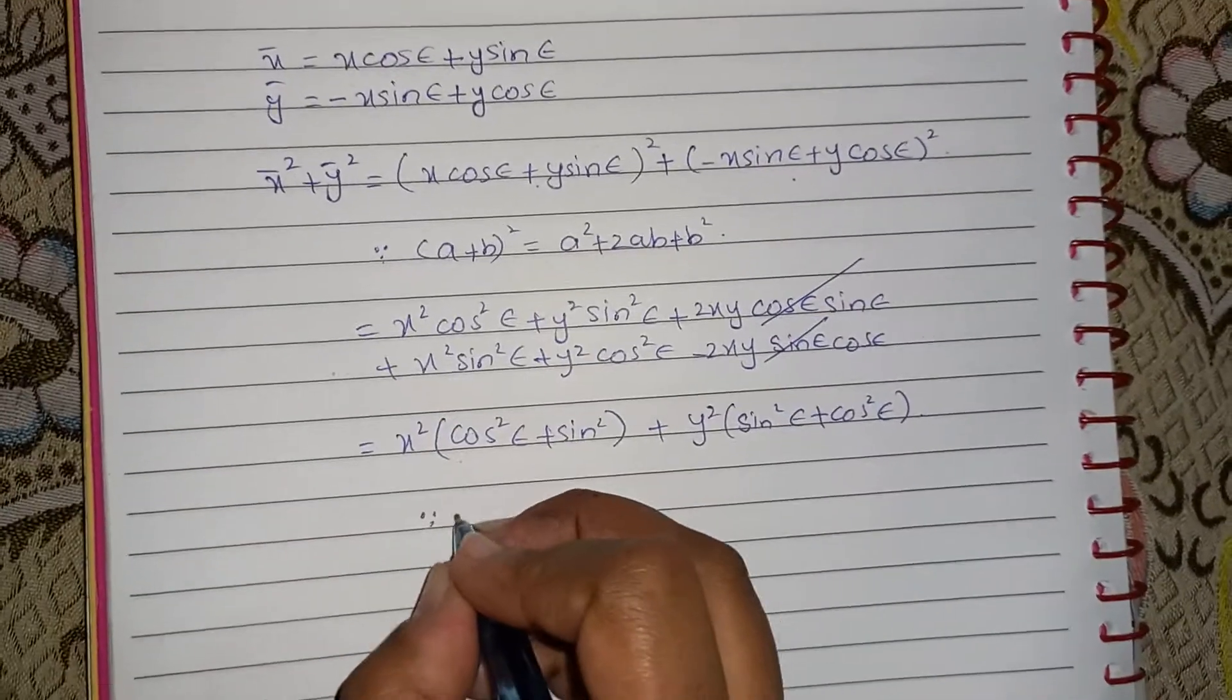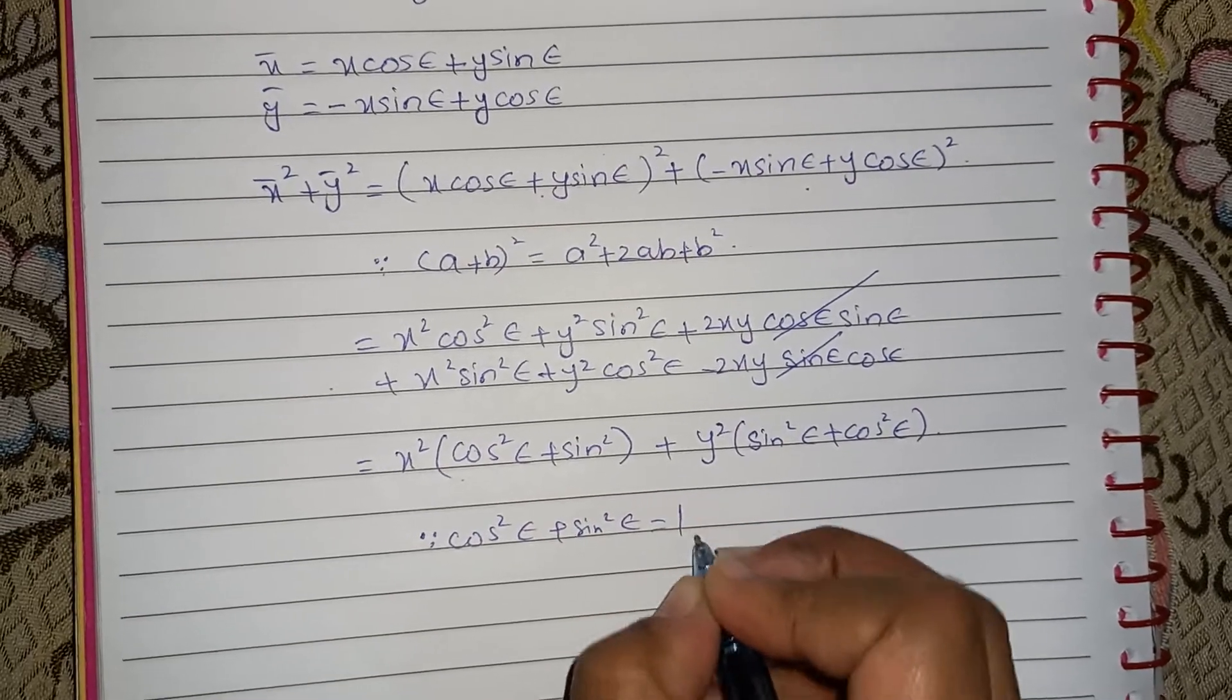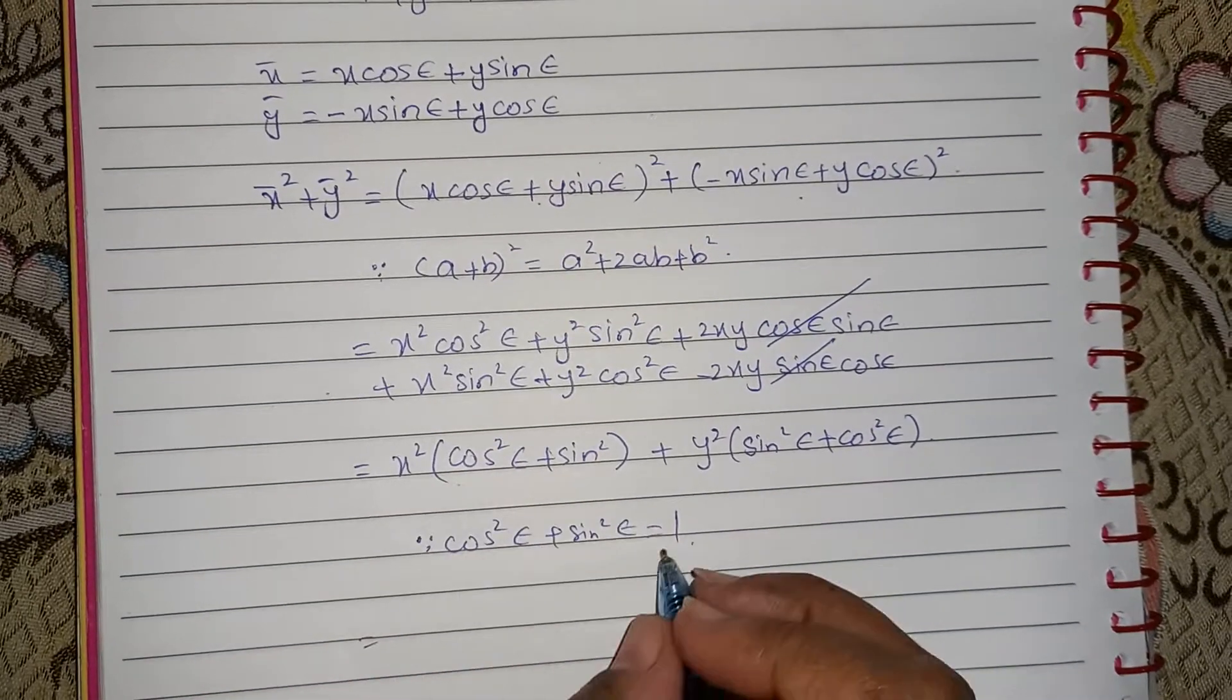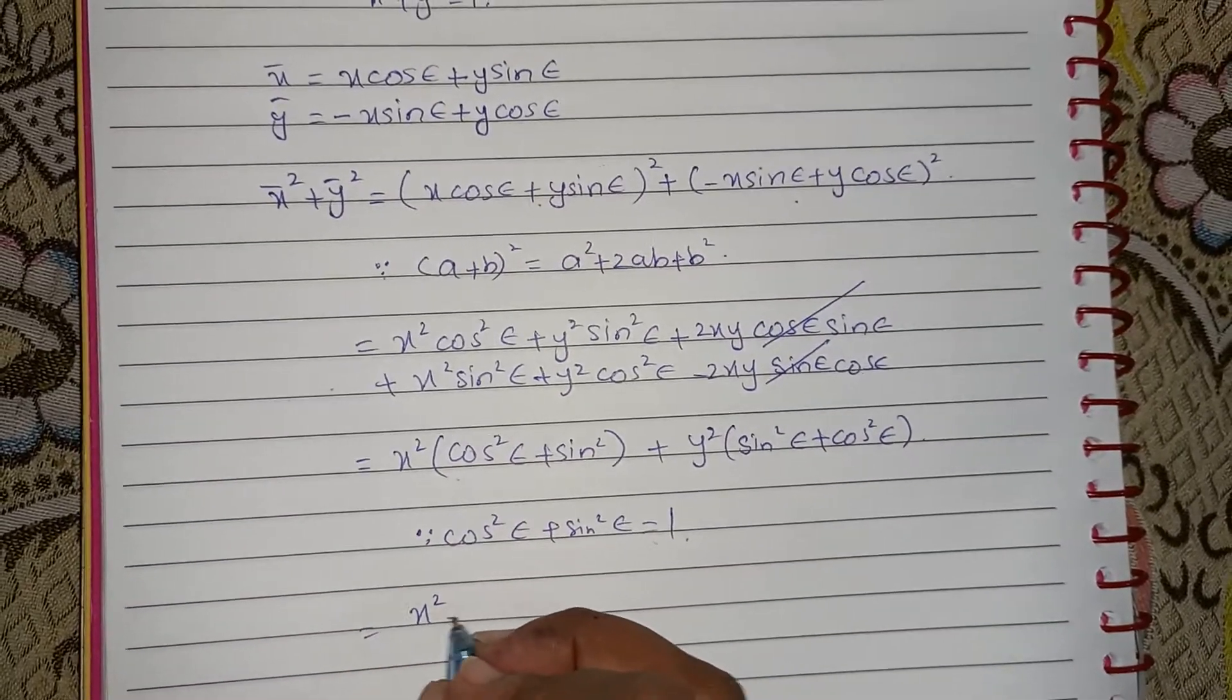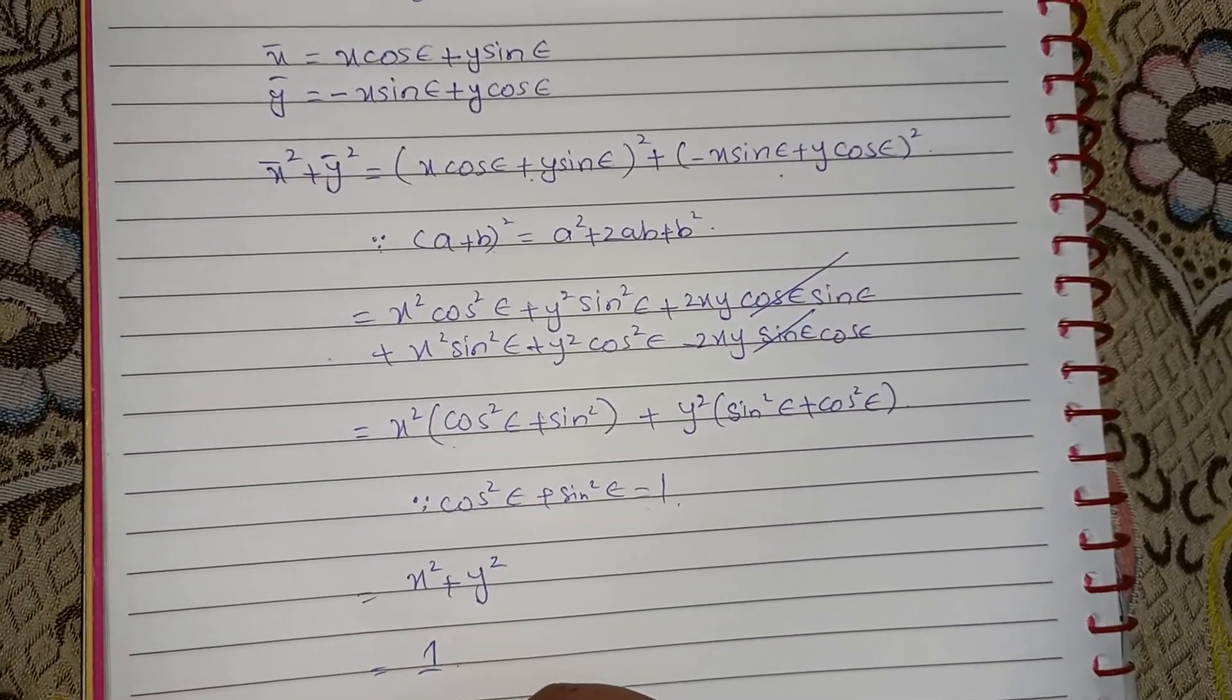And we know the identity that cos² ε + sin² ε = 1. So if I substitute 1 here, then we are left with x² + y² = 1.